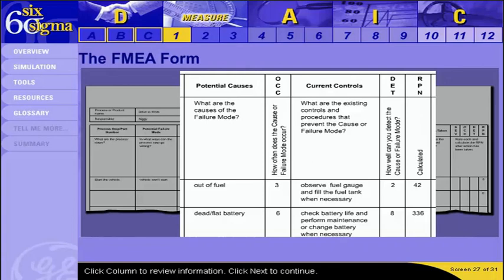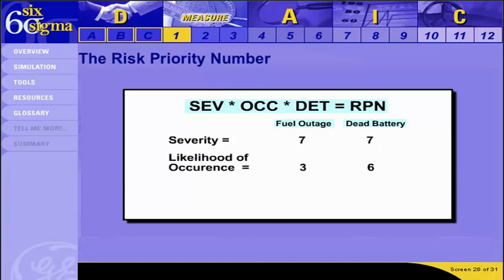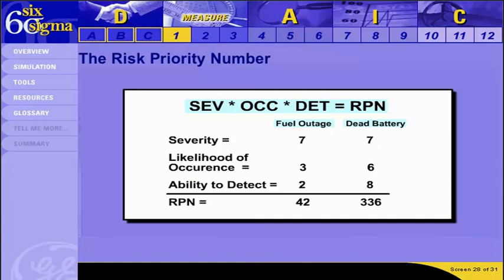The risk priority number is calculated by taking the product of the severity score, the likelihood of occurrence score, and the ability to detect score. In the case of one failure mode, all severity scores will be the same — in this case, 7. We regarded the likelihood of occurrence much higher for the dead battery than the fuel outage, so its OCC score is higher. Likewise, we regarded the chance of the controls failing to detect the problem to be far worse for the battery than the fuel level, so that cause received a higher detect score. Multiplying the three scores gives an RPN of 42 for the vehicle failing to start due to an undetected fuel outage and 336 for the same failure due to an undetected dead battery.